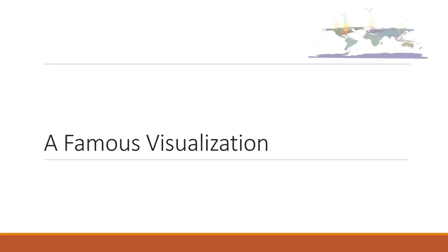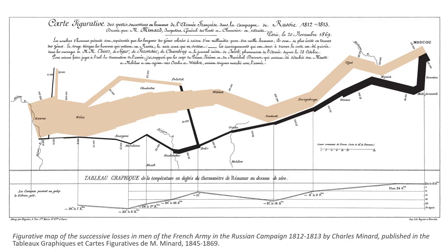Finally, let's see a very famous visualization. When we learn visualization, almost all professors will show you this chart. This is one of the most famous visualizations — someone said this is possibly the best statistical graph ever done. It shows Napoleon's campaign into Russia. The size of the bars represents the number of troops, and initially they are marching towards Moscow.